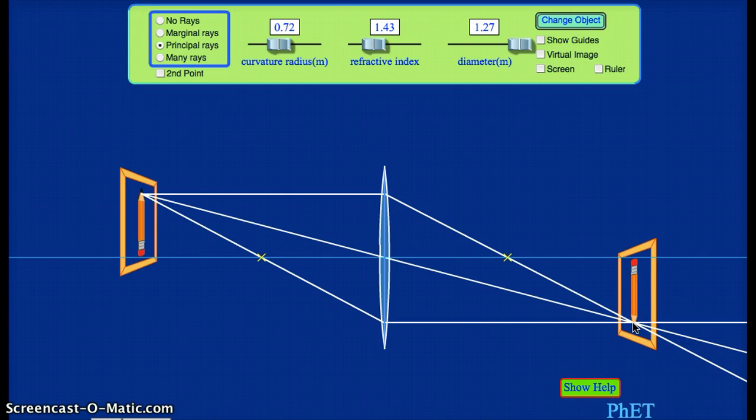But the distance that these lines cross away from this horizontal line passing through the middle of the lens, what we call the optical axis, the distance where these lines cross from the optical axis tells us the height of our image.